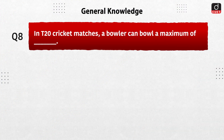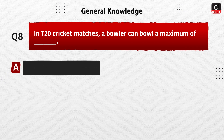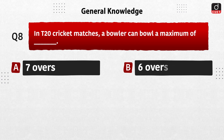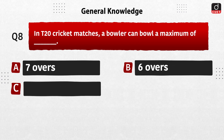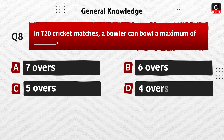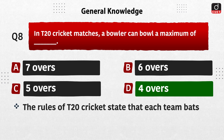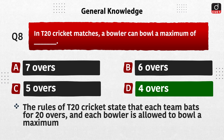Next question: in T20 cricket matches, a bowler can bowl a maximum of how many overs? The rules of T20 cricket state that each team bats for 20 overs and each bowler is allowed to bowl a maximum of 4 overs in the innings.